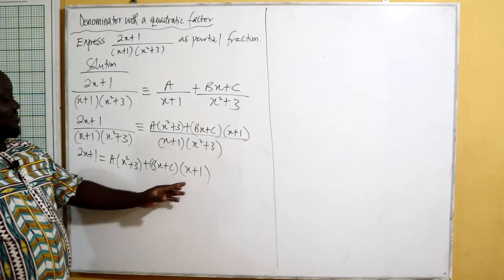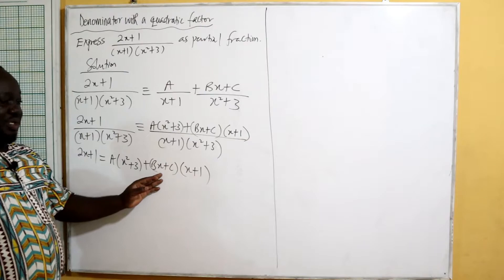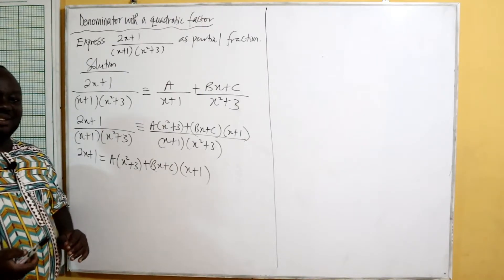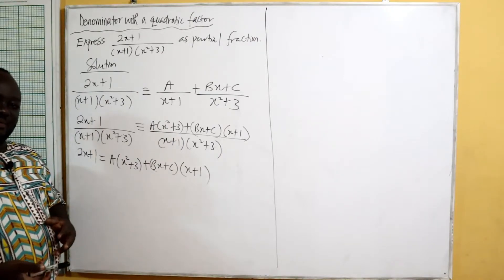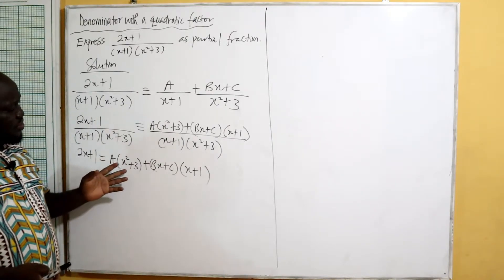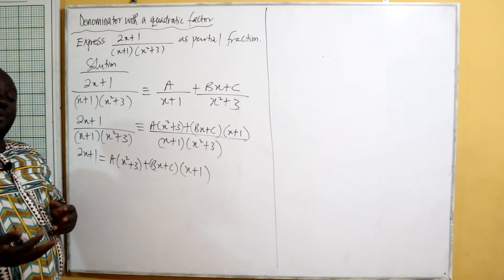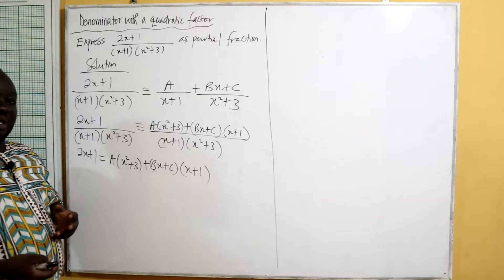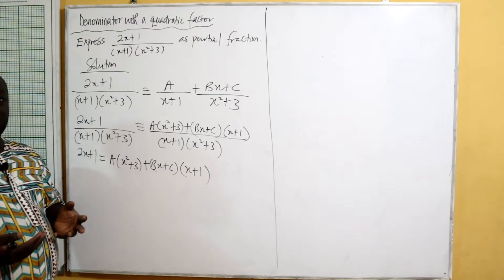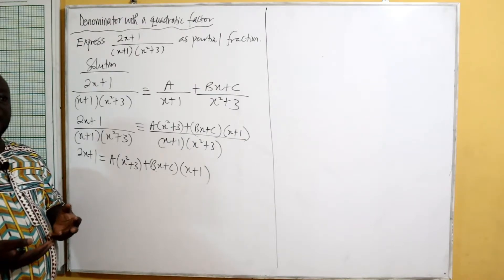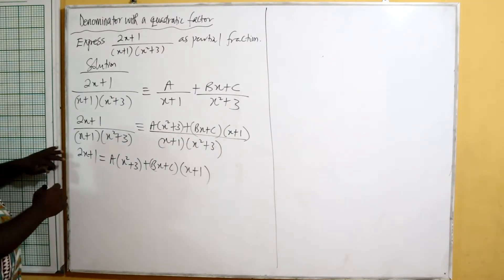You realize that if we substitute x equals negative one we can get a, but then what happens to b and c? The best approach is to expand, collect like terms, compare coefficients, and set up a simultaneous equation — in two or three variables depending on how many unknowns you have.